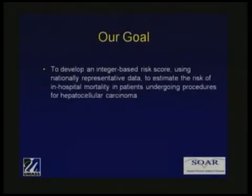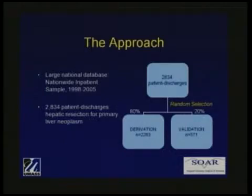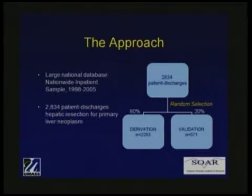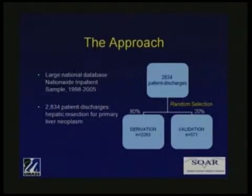It was therefore our goal to develop a simple risk score using nationally representative data that could estimate the risk of in-hospital mortality for patients undergoing procedures for hepatocellular carcinoma. We used the nationwide inpatient sample — the NIS — a nationally representative administrative database containing information from inpatient discharge records from both university and community hospitals. It approximates a stratified 20% sample of the U.S., allowing for population-level estimates to be drawn. From the NIS, we abstracted patient discharges with a procedure code for hepatic resection and a concurrent diagnosis of a primary liver tumor.